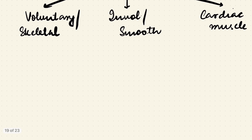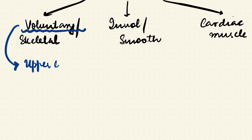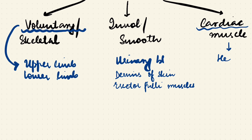The first thing you need to know is where these muscles are present. Voluntary or skeletal muscles, which we can control, are present in our limbs — the upper limb (arm) and the lower limb (leg). Smooth muscles, which are involuntary, are present in visceral organs — for example, the urinary bladder, the dermis of skin, and the erector pili muscles. Cardiac muscles, as the name suggests, are present in the heart.